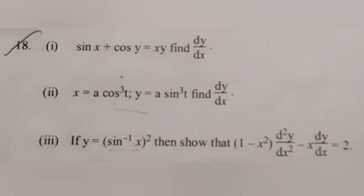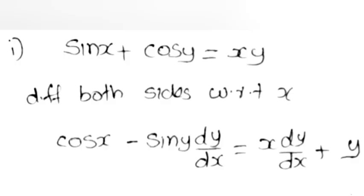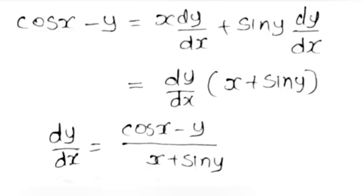Problem 18, Part 1. Given sin x + cos y = xy, find dy/dx. Differentiating both sides with respect to x: cos x − sin y · dy/dx = x · dy/dx + y. Rearranging: cos x − y = dy/dx(x + sin y). Therefore dy/dx = (cos x − y)/(x + sin y).